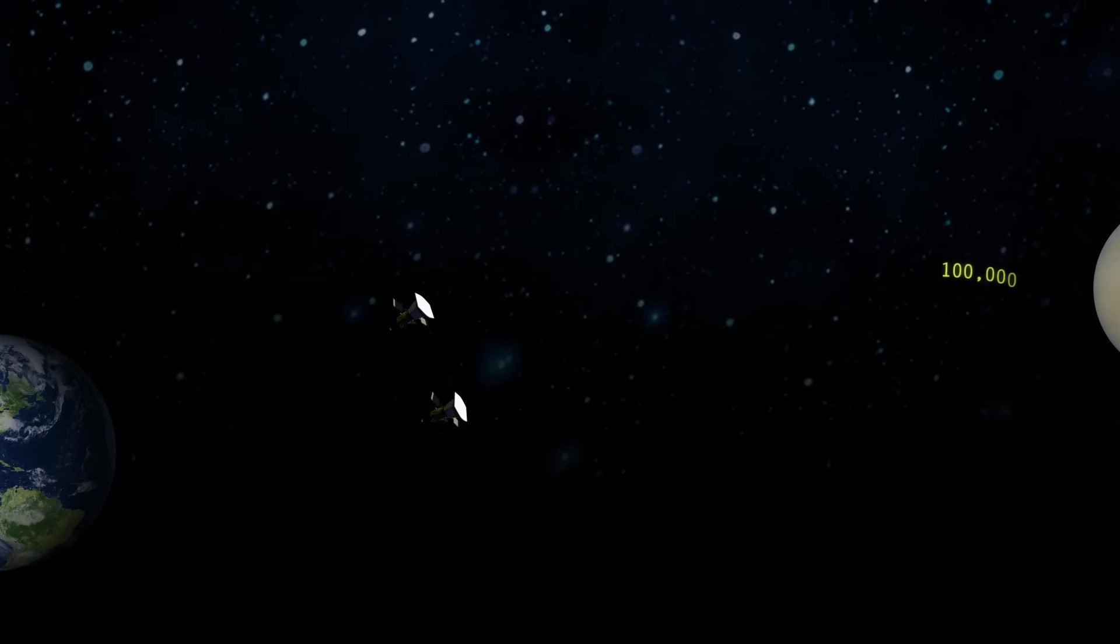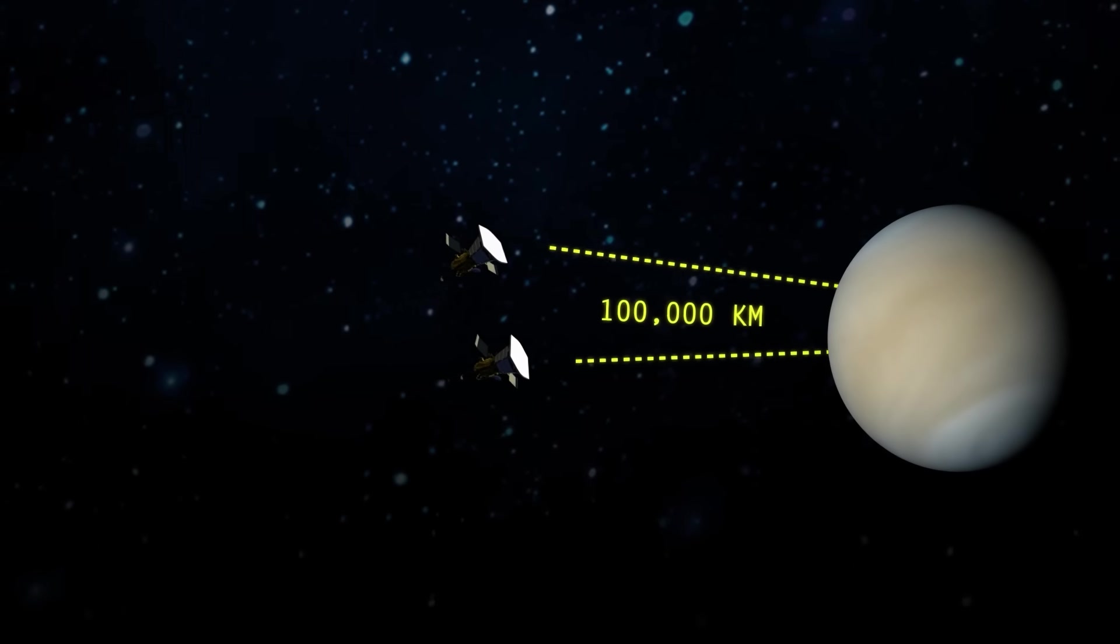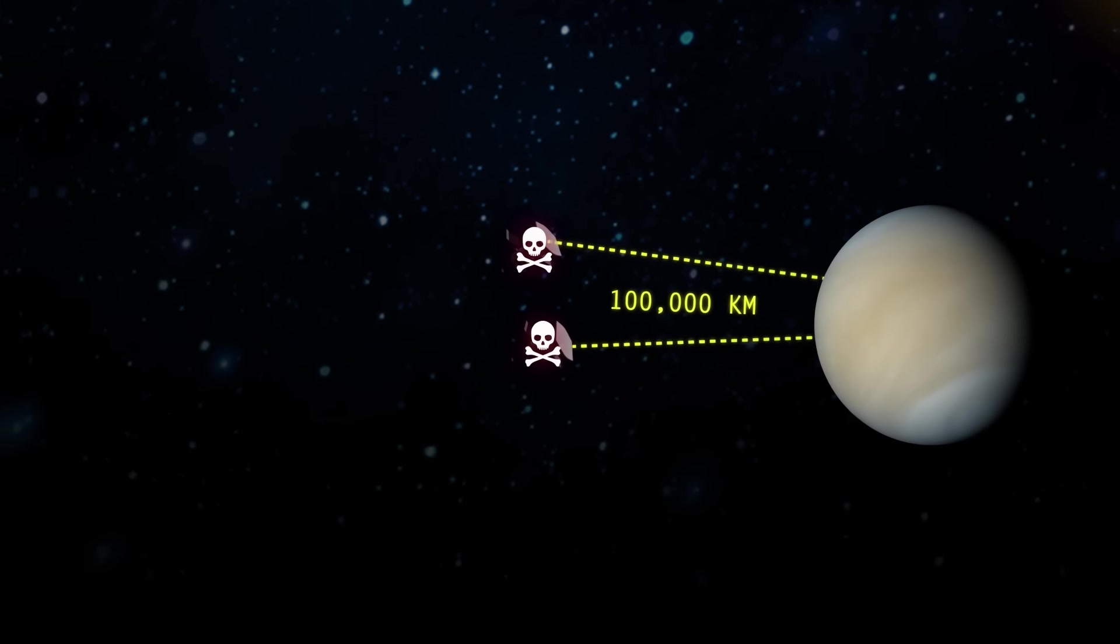The good news is that both probes were able to fly within 100,000 kilometers of Venus. The bad news is that both probes experienced a full system failure before reaching their destination and therefore no usable data was returned.